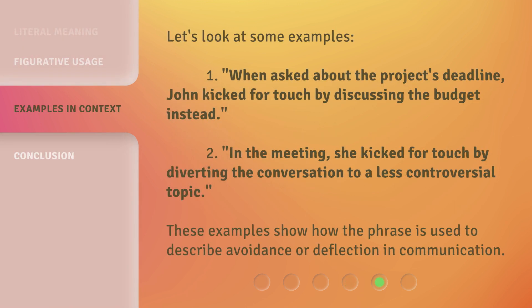Let's look at some examples. First, when asked about the project's deadline, John kicked for touch by discussing the budget instead. Second, in the meeting, she kicked for touch by diverting the conversation to a less controversial topic. These examples show how the phrase is used to describe avoidance or deflection in communication.